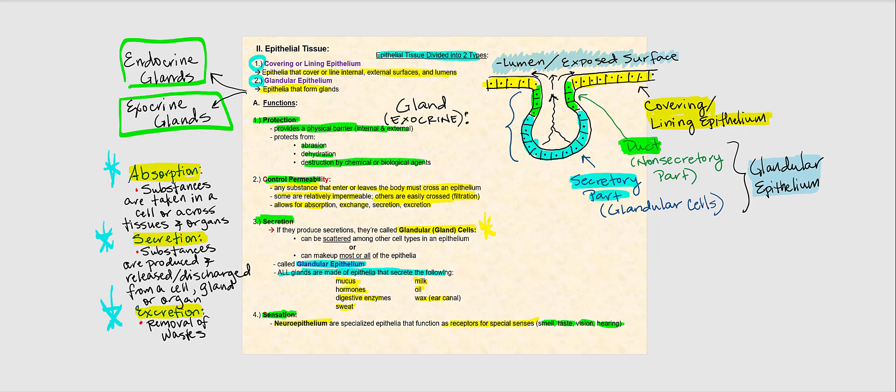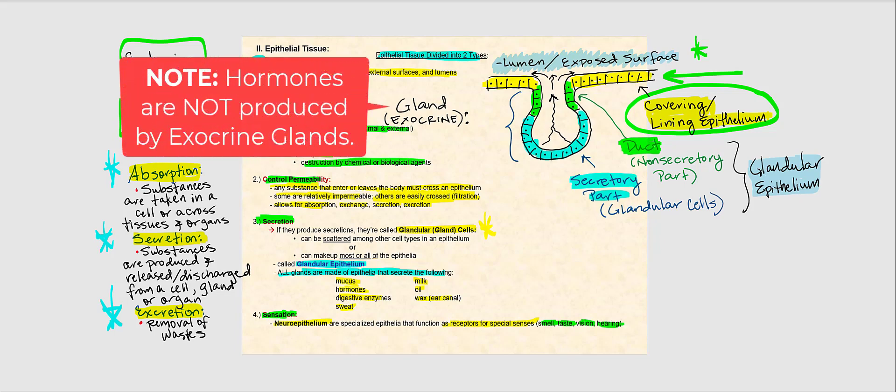Now let's look at an exocrine gland illustration. The yellow-highlighted area represents covering and lining epithelia — epithelial tissue facing the lumen or exposed surface. The exocrine gland has two parts: the duct, which is the non-secretory part, and the secretory part, which produces products that are ultimately discharged or released — think mucus, sweat, or oil.